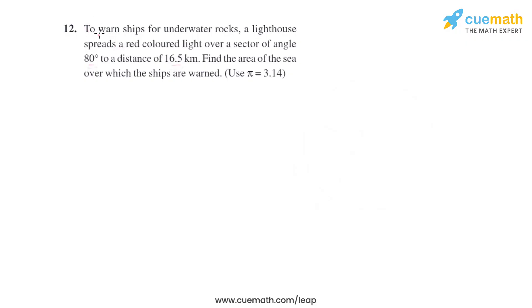Question 12 of this exercise is: To warn ships for underwater rocks, a lighthouse spreads a red colored light over a sector of angle 80 degrees to a distance of 16.5 kilometers. Find the area of the sea over which the ships are warned. So the lighthouse basically spreads a red colored light in the form of a sector of a circle having an angle 80 degrees and radius 16.5 kilometers. So we have to find the area of the sector.